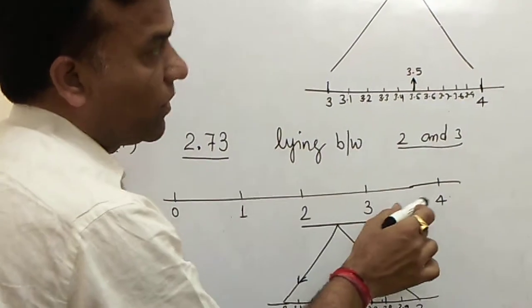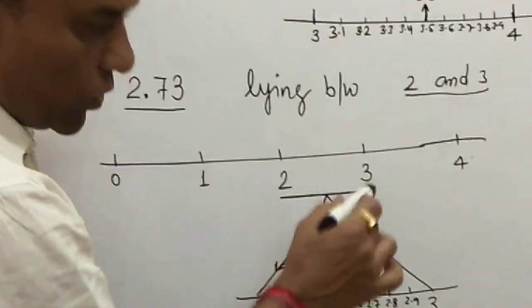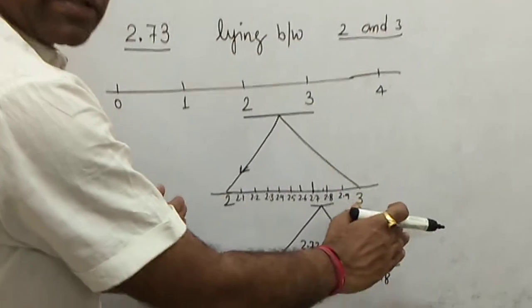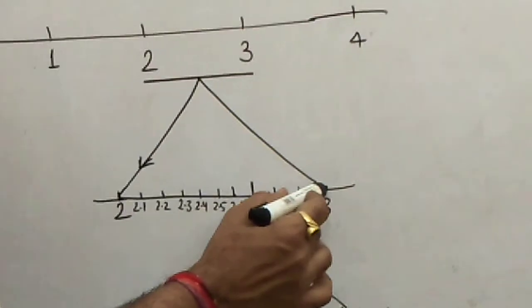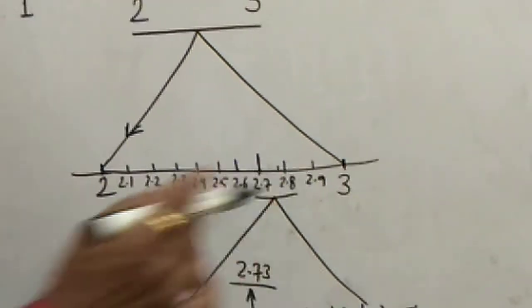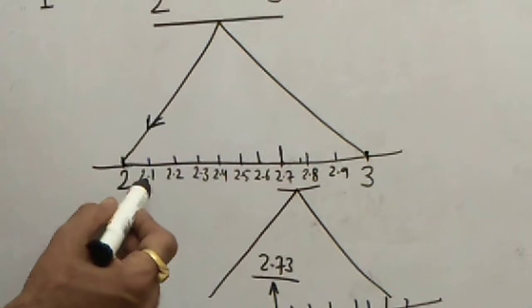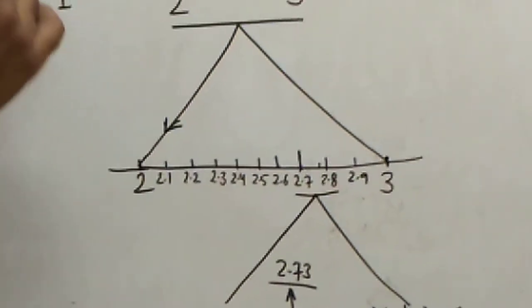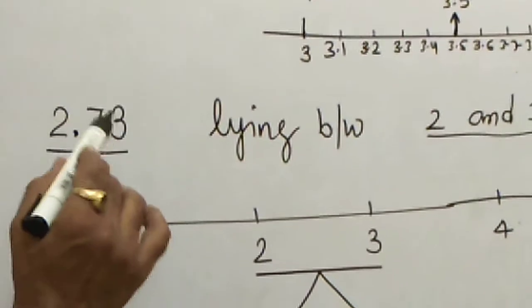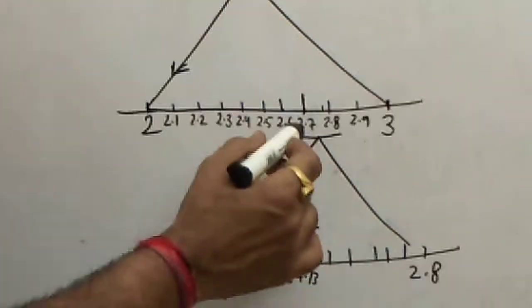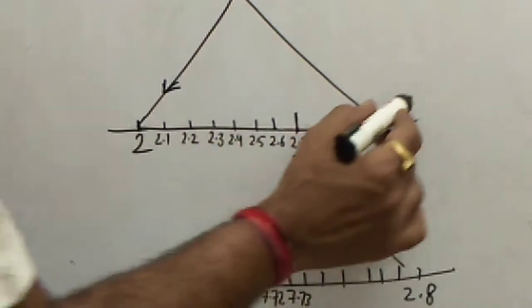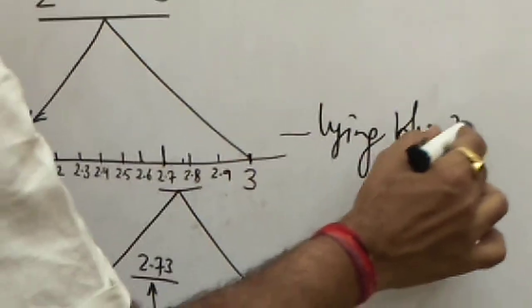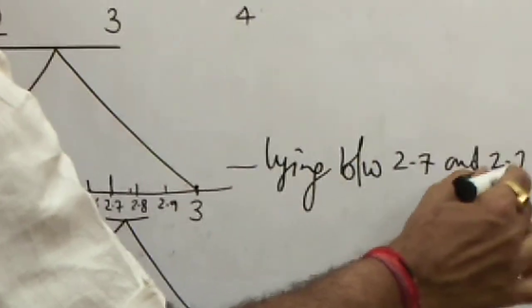We draw a number line from 0 to 4 and underline 2.73, since it lies between 2 and 3. We enlarge the section between 2 and 3, dividing it into 10 parts, and mark 2.1, 2.2, 2.3, 2.4, 2.5, 2.6, 2.7, and 2.8. Our number 2.73 lies between 2.7 and 2.8.